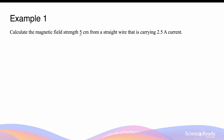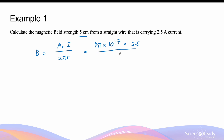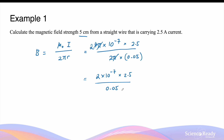Calculate the magnetic field strength 5 cm from a straight wire carrying a current of 2.5 A in magnitude. The magnetic field strength is equal to μ₀ times the current divided by 2πr. μ₀ is 4π × 10⁻⁷, multiplied by 2.5 A, divided by 2π times the distance of 0.05 meters. The π values cancel and the 4 and 2 simplify, giving 2 × 10⁻⁷ in the numerator. This simplifies to 2 × 10⁻⁷ × 2.5 / 0.05, giving an answer of 1.0 × 10⁻⁵ Teslas.